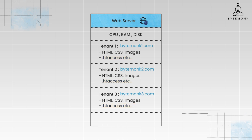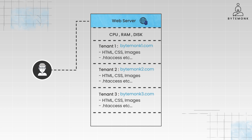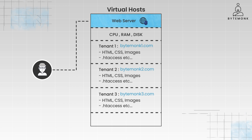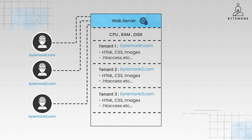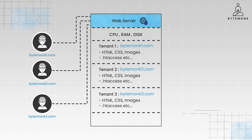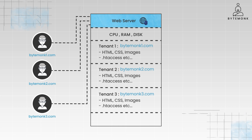All tenants share the server's core resources. When a visitor accesses a website, the server processes the request using its CPU, retrieves files from the disk, and temporarily stores data in its RAM. Web servers often use the concept of virtual hosts to map incoming requests to the correct tenant's files and configurations based on the domain name. In the context of web hosting, a virtual host can indeed be considered a tenant. The web server uses the domain name in the incoming HTTP request to determine which website files and configurations to serve. Efficient resource management is crucial to ensure fair allocation and prevent one tenant's heavy usage from impacting others.